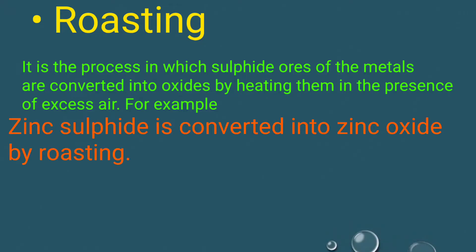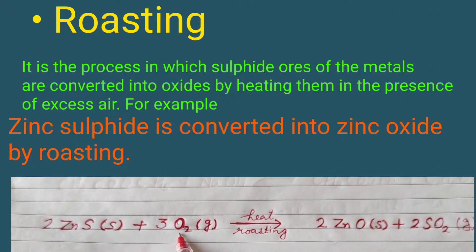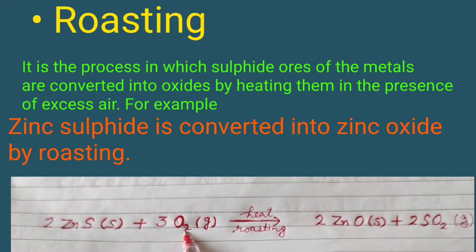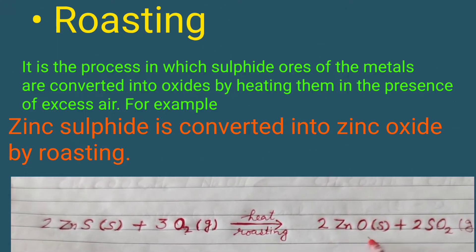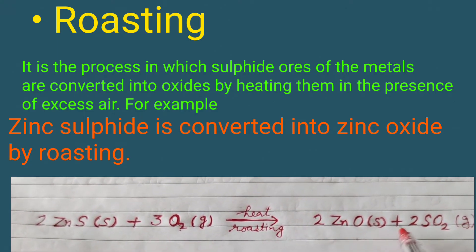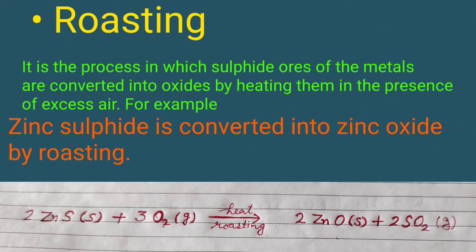For example, zinc sulphide is converted into zinc oxide by roasting. Zinc sulphide is heated in the presence of oxygen in the roasting process to form zinc oxide and sulphur dioxide.